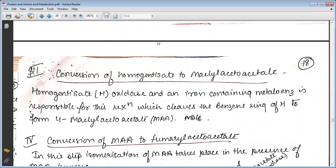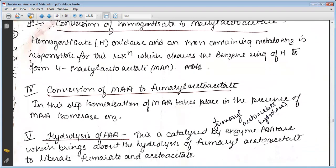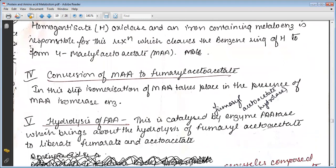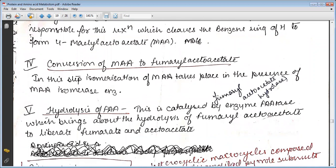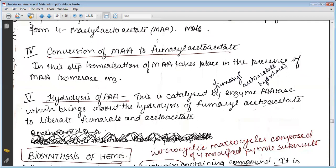The conversion of maleylacetoacetate to fumarylacetoacetate - in this step, isomerization of maleylacetoacetate takes place in the presence of isomerase. Hydrolysis of fumarylacetoacetate is catalyzed by fumarylacetoacetate hydrolase, which brings about the hydrolysis of fumarylacetoacetate to liberate fumarate and acetoacetate.